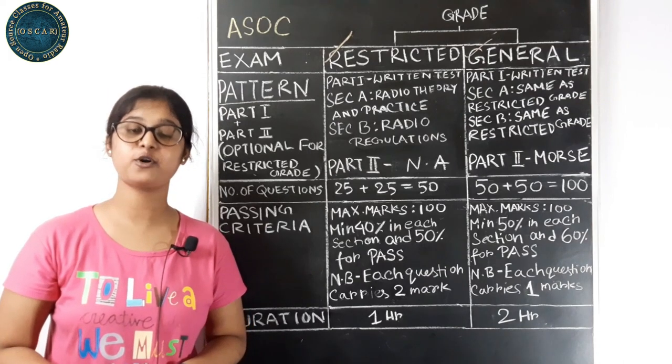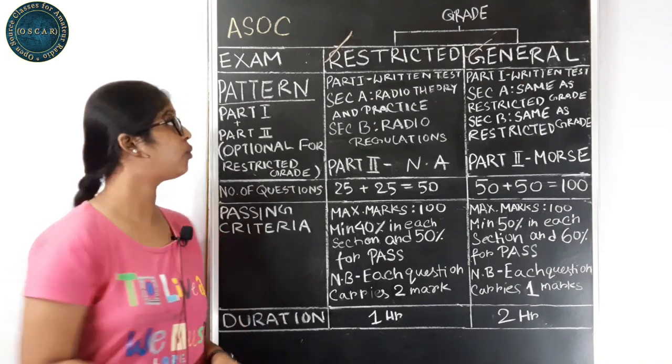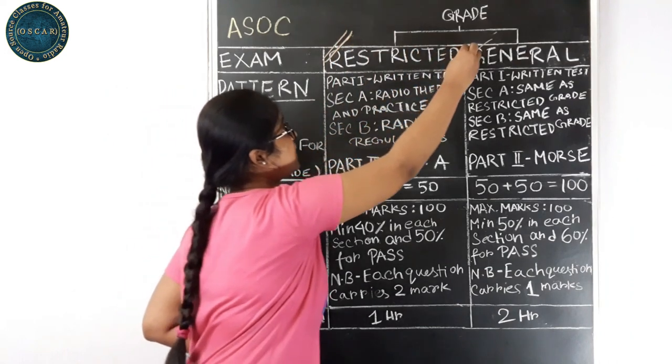ASOC stands for Amateur Station Operator Certificate Examination and there are two grades in the examination. One is Restricted Grade, another one is General Grade.